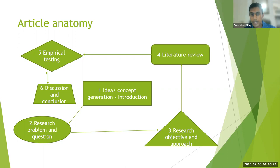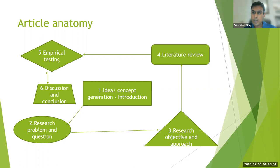Stemming from the idea and introduction, we articulate what the research problem actually is and what our research question is. From there the article moves into objectives — what we actually want to achieve from the research paper — and the research approach that will be used to test our assumptions and find the answer to our question, which usually involves a literature review.